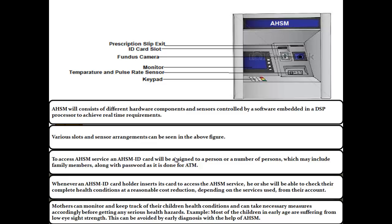Various slots and sensor arrangements can be seen in the above figure. To access AHSM service, an AHSM ID card will be assigned to a person or a number of persons, which may include family members, along with a password, as it is done for ATM. Whenever an AHSM ID card holder inserts their card to access the AHSM service, they will be able to check their complete health conditions at a reasonable cost deducted from their account.